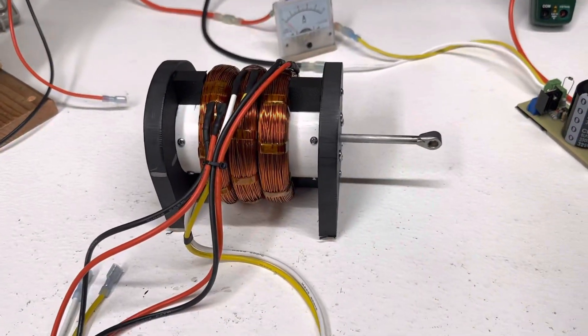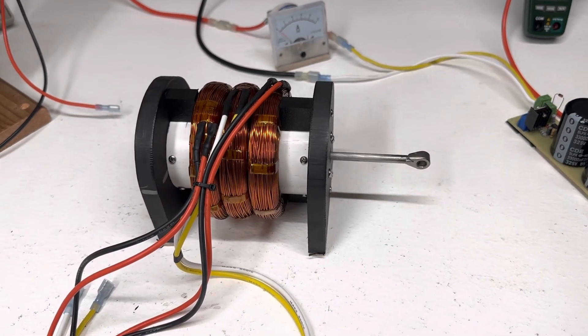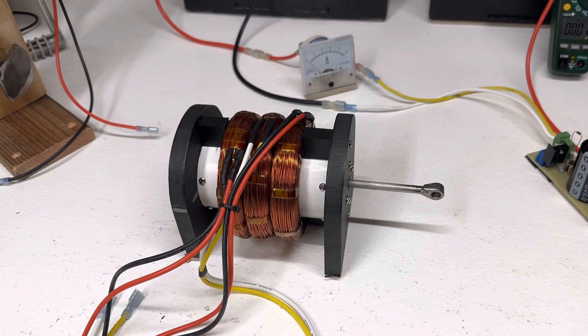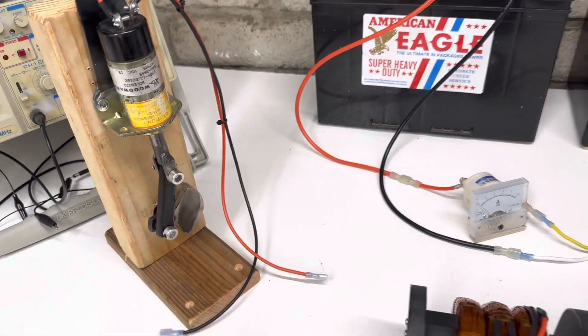And this is my new one. This is my version of a Bob Teal type motor. Still have to build the motor part of it, but it's going to go on this rotor.